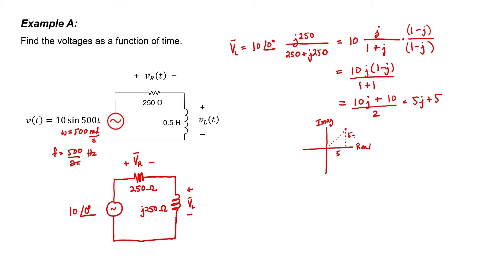To write this number in polar form, we need the magnitude (the hypotenuse) and the phase angle. The phase angle is 45 degrees and the hypotenuse is found with the Pythagorean theorem. We can then convert this phasor back to the time domain. 45 degrees in radians is pi over 4, although some people just write 45 degrees there, and that's fine too.